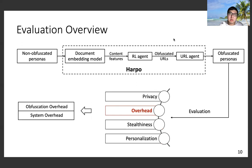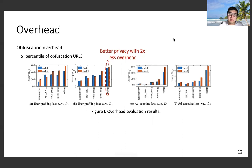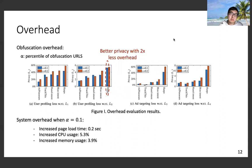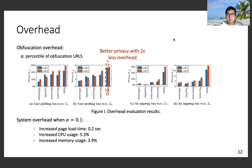Next, we present our overhead evaluation results. As shown in Figure 1, the blue column represents alpha equals 0.1 and the red column represents alpha equals 0.2. Comparing the red column of Harpo with those of other baselines, Harpo achieves better privacy with two times less overhead. We also evaluate system overhead when alpha equals 0.5. In terms of increased page load time, and CPU and memory usage, experiments on a laptop on a home Wi-Fi network show increased page load time of around 0.2 to 0.3 seconds and increased CPU and memory usage of around 4 to 6 percent, meaning Harpo has minimal impact on overall user experience.